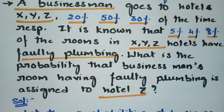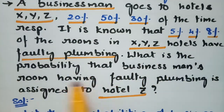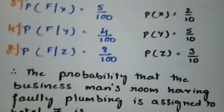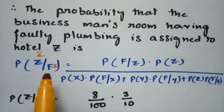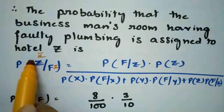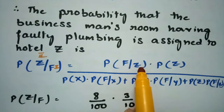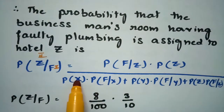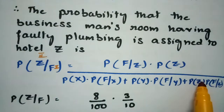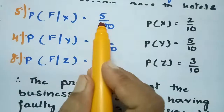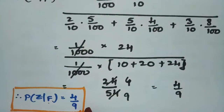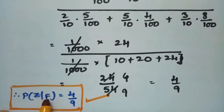The question asks for the probability that the businessman's room having faulty plumbing is assigned to hotel Z, which is P(Z|F). Using Bayes' theorem: numerator is P(F|Z) × P(Z) = 8 by 100 × 3 by 10; denominator is P(X)×P(F|X) + P(Y)×P(F|Y) + P(Z)×P(F|Z). After cancelling, the faulty plumbing probability from hotel Z is 4 by 9.